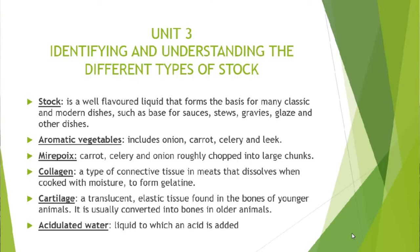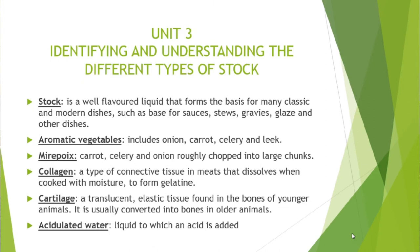Unit three is where we will be identifying and understanding the different types of stocks. Before we identify the different types of stocks, we need to explain some terms. The terms we are going to explain are: number one, what is a stock; number two, what are the aromatic vegetables; number three, the mirepoix; number four, collagen; and number five, cartilage as well as acidulated water.